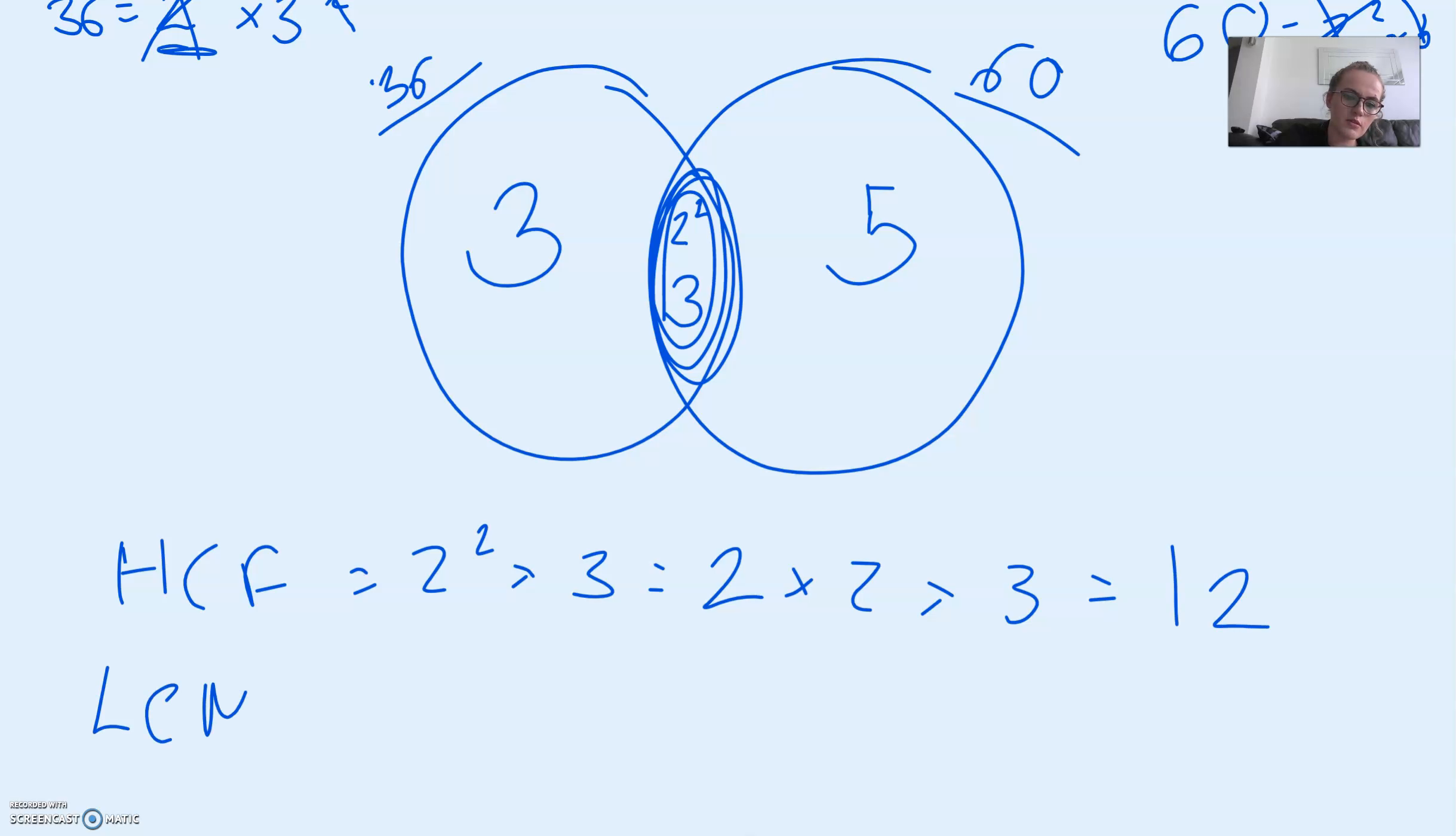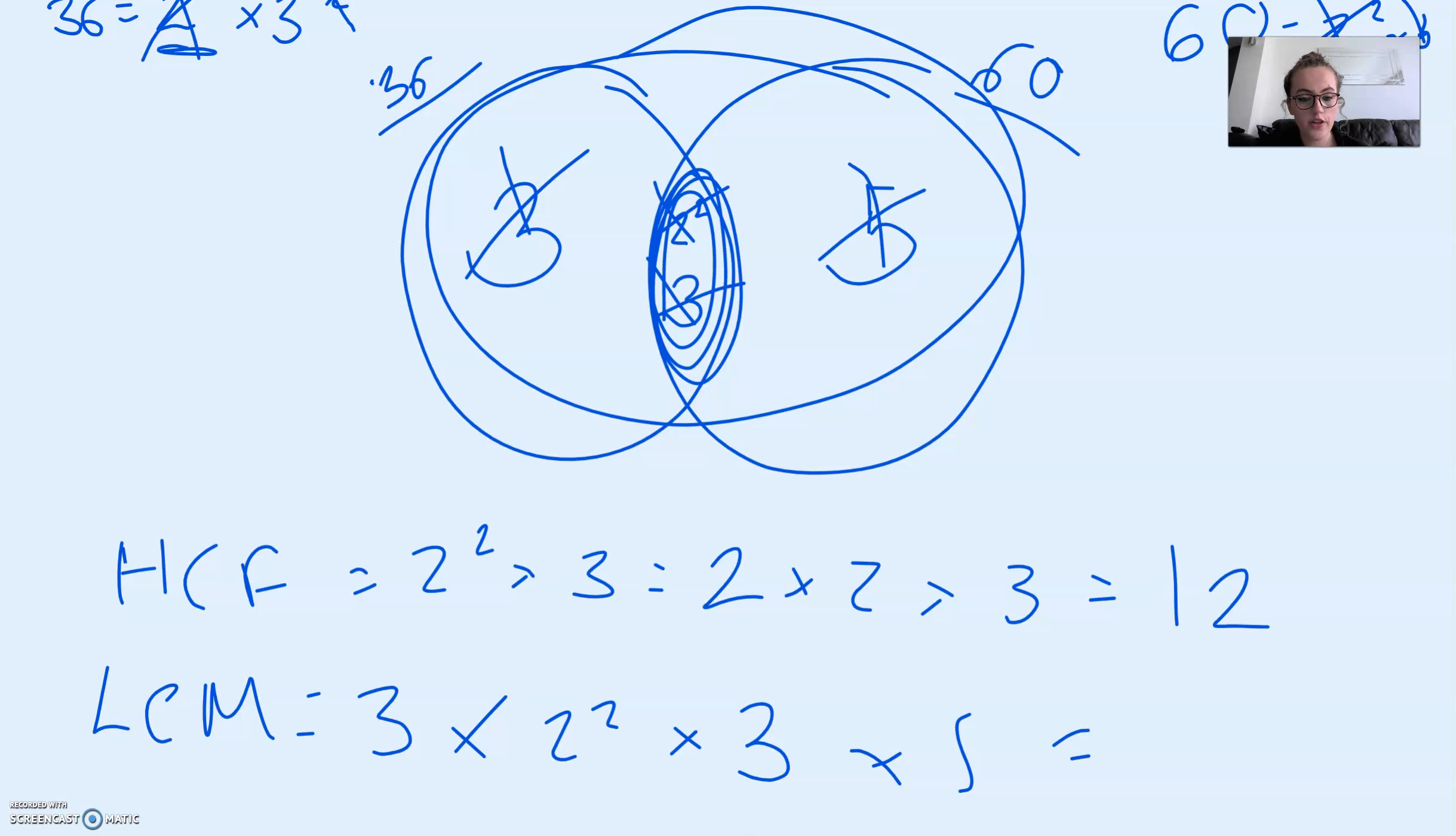And then the lowest common multiple is going to be all the numbers multiplied by each other. So we're going to do 3 times 2 squared times 3 times 5, which gives... So 3 times 2 squared is 3 times 4, which is 12, times 3, which is 36, times 5, which is 180. So therefore the highest common factor of 36 and 60 is 12, and the lowest common multiple of 36 and 60 is 180.